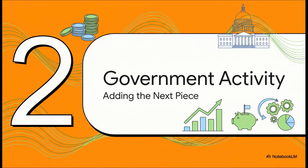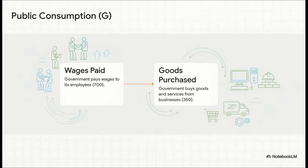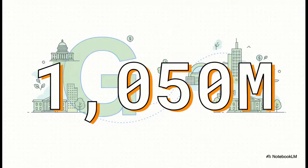So we've got our national income nailed down. Now let's grab the next piece of our economic puzzle: government activity. When we talk about government spending, or public consumption, it's really made of two parts. First, there's that $700 million it pays its own employees, which we already talked about. And second, there's what it buys from private businesses — computers, cars, materials to build roads. Let's say that's another $350 million. Add those two together and you get total public consumption, which economists call G, of $1,050 million.